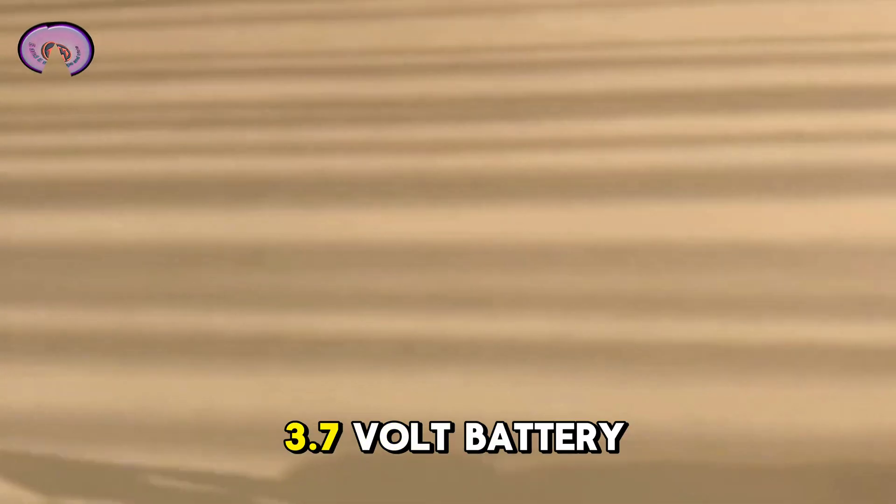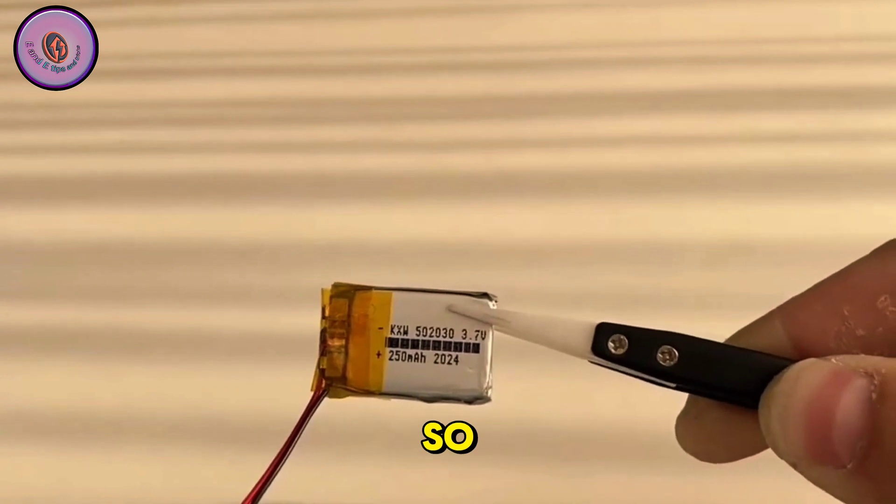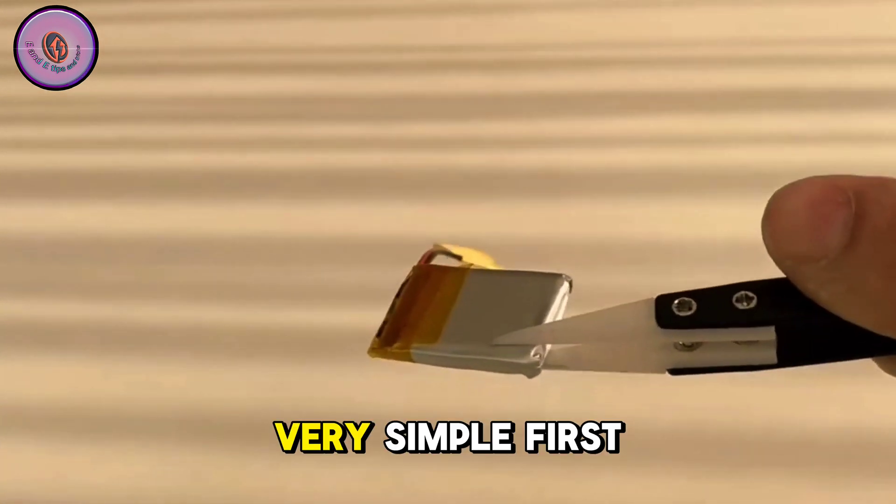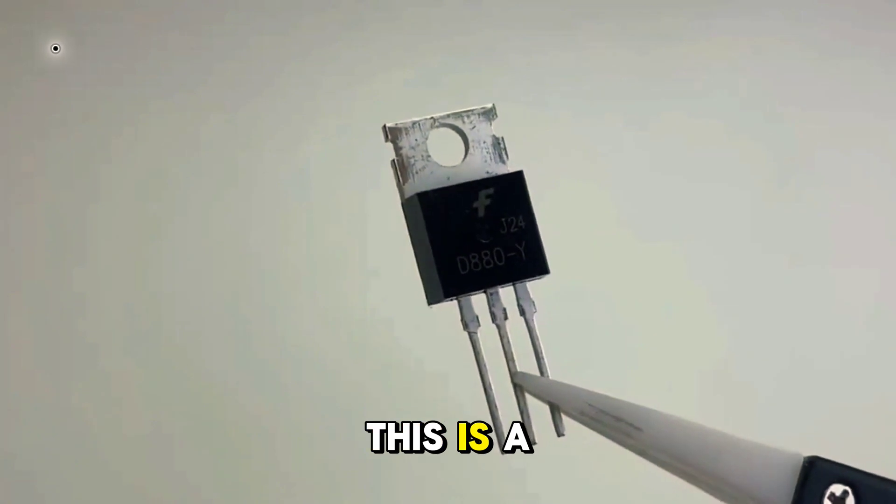This is a very common small 3.7 volt battery, so how can you increase its voltage by a factor of 10,000? Very simple. First of all, this is a type of power enlargement triode. Cut off its middle pin positive.